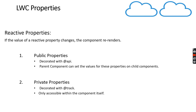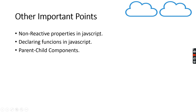Public reactive properties are the ones which are declared using the @api decorator. Private reactive properties are the ones which are declared using the @track decorator. Non-reactive properties are declared without any decorator, so even if the value of a non-reactive property changes, the component does not get re-rendered.